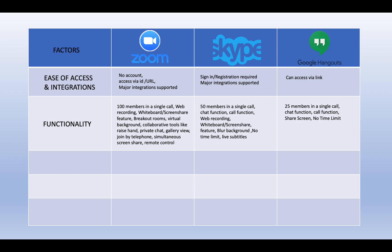The next factor is video quality. Zoom has very good video quality — you can have HD calls and connectivity is great. For Skype, I would say it is average; I frequently face disconnections when my internet speed is slow, causing freezing or call drops. For Google Hangouts, I have faced no issues and would rate its video quality at par with Zoom.